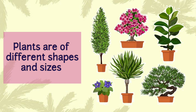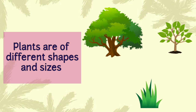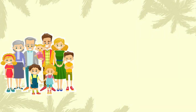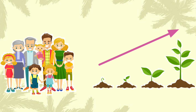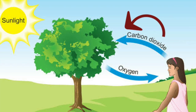Plants are of different shapes and sizes. Some plants are tall and big, some are short and small, and some are very small. Together, they make the plant kingdom. Just like us, plants also grow and need air to breathe. We are interdependent on each other, which means we cannot live without plants, nor can plants live without us. We give carbon dioxide to plants and plants give us oxygen to breathe.